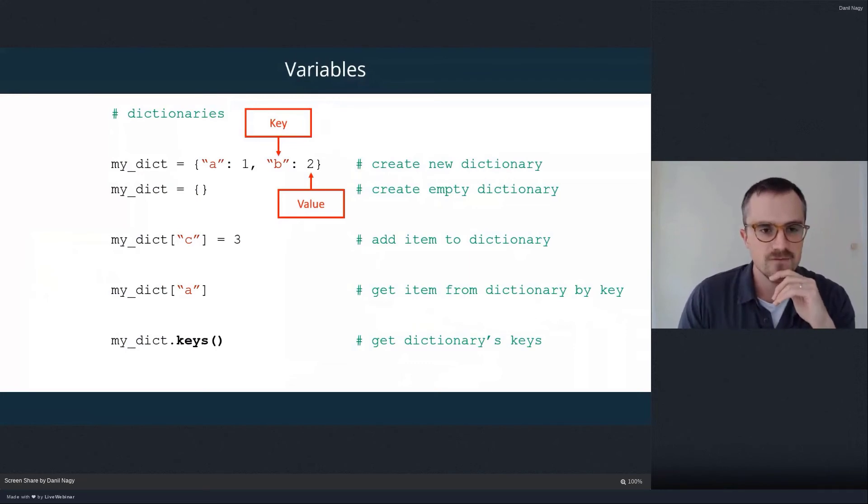And you can see that every item in the dictionary actually has two elements. We have one element here on the left side of the colon and one element on the right. And the element on the left side is called the key. And that's our way to access data from the dictionary. And the value on the right side of the colon is called the value. And that's the actual piece of data that's stored.